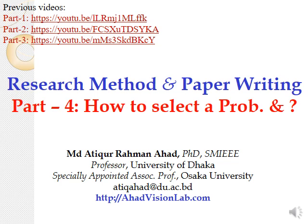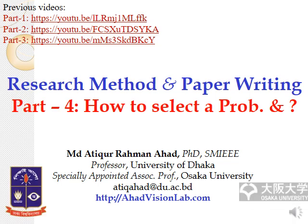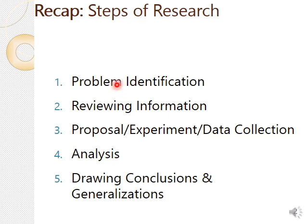Hello, this is Part 4 on research methodology — a basic talk on how to do research, especially for young people and young researchers. In this presentation I would like to mention how to select a problem. These are the basic steps: for any research we try to identify the problem, which is the most important part, then reviewing information, proposal, experiment, data collection, deep analysis, and finally conclusions.